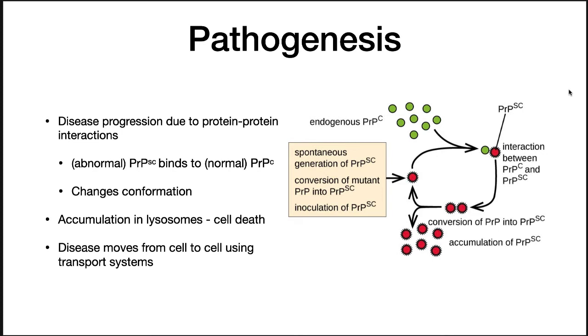The disease spreads because abnormal PRP moves from cell to cell using normal cell transport mechanisms, and over a period of time it kills enough neural tissue that the animal dies.